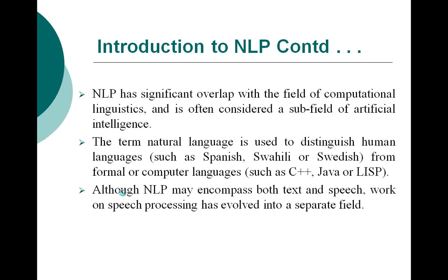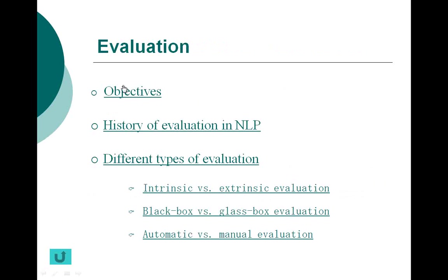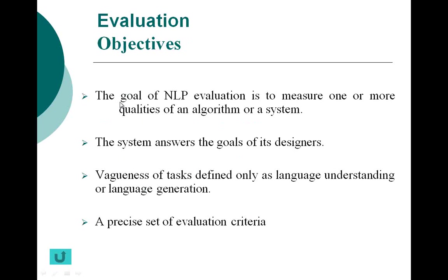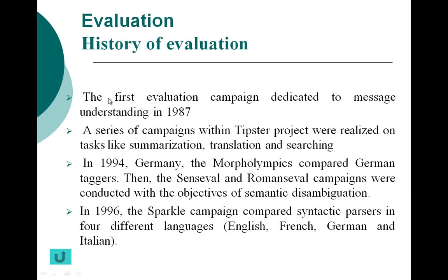Next, we will be moving to the evaluation section, which focuses mainly on objectives, history, and different types of evaluation. Under the objectives section, we discover several goals of NLP. The main goal is to determine the behavior of an algorithm or a system, and sub-goals include answering the goals of designers, defining tasks such as language understanding or generation, and identifying a precise set of evaluation areas.